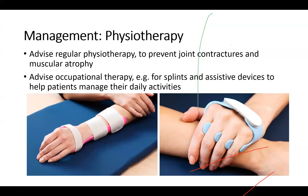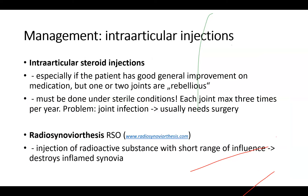Another important element is physiotherapy. The patient should have regular physiotherapy to prevent joint contractures and muscular atrophy, and all joints should be moved at least once per day. Assistive splints and assistive devices are also helpful to help patients manage their daily activities. Intra-articular steroid injections are especially helpful if the patient has good general improvement but has one or two joints still causing problems — this is called the rebellious joint.